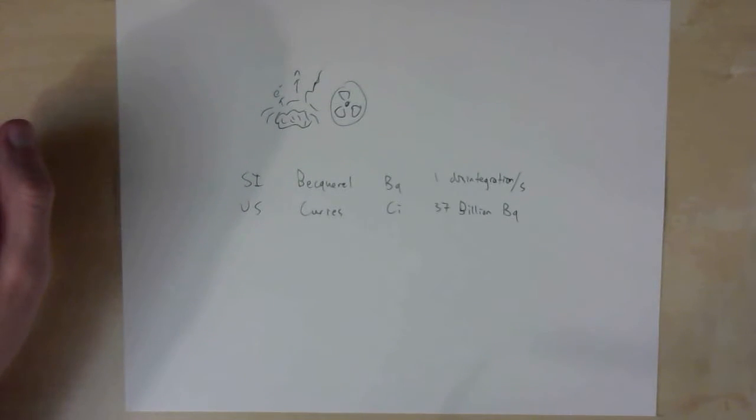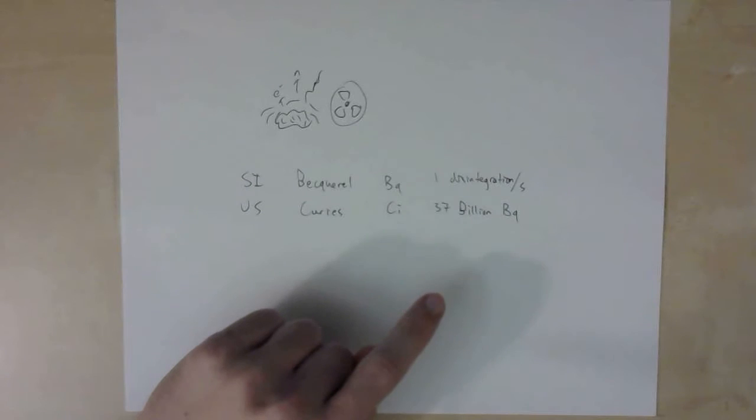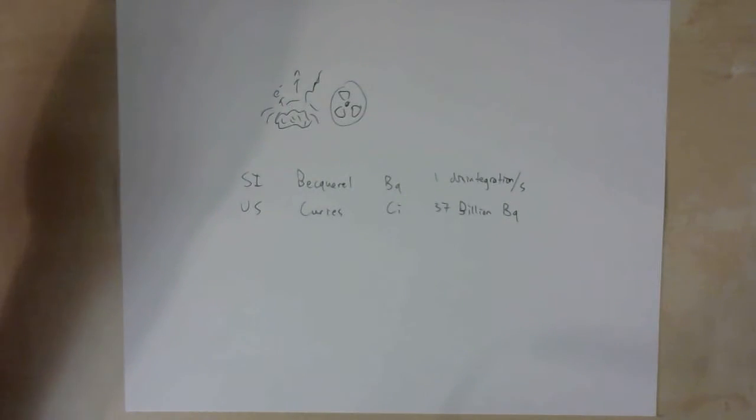Becquerel is one disintegration per second. If 37 billion Becquerel sounds like a lot, it kind of is. It carries a pretty good size sample of radioactive material, but one disintegration per second is basically nothing. You have no idea that was happening.